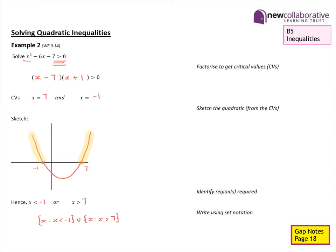To summarize: when solving a quadratic inequality, find the critical values by solving the quadratic equation — using factorization or the quadratic formula. Sketch the graph using only the roots as key points, since we just need to identify regions above or below the X-axis. In this case we wanted regions above the X-axis because the inequality was X² − 6X − 7 > 0. Then write the solution set using inequality notation, set notation, or interval notation.